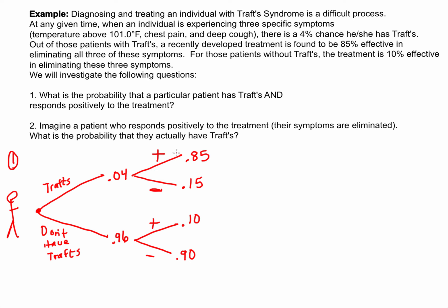This graphically illustrates what's happening. If a person has Traff's and they get better, that's T and positive. If they have Traff's and they don't respond, that's T and negative. Down below, D represents not having Traff's: they don't have it but did get better, or they don't have it and didn't get better. These are the four possibilities — they either have the syndrome or they don't, and they either responded positively or negatively to the treatment.